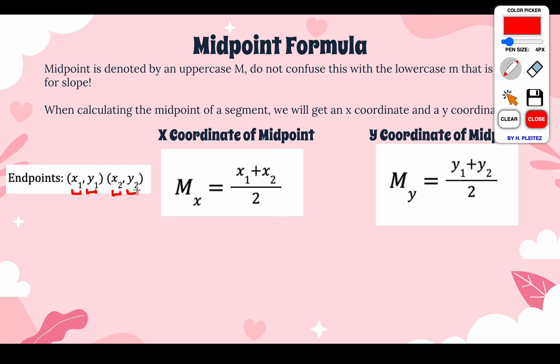To calculate the midpoint, we need an x-coordinate and a y-coordinate. To find the x-coordinate of your midpoint, what you need to do is take your x-values of your endpoints, add them up, and then divide by 2 to find that distance that is exactly halfway in between.